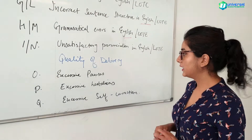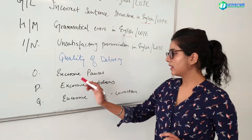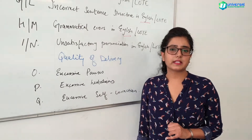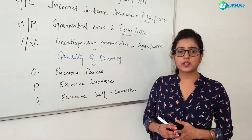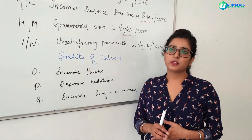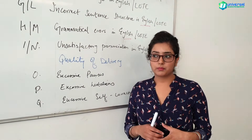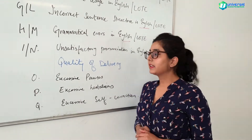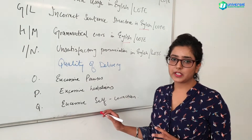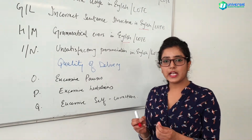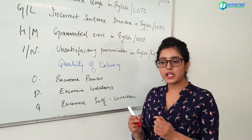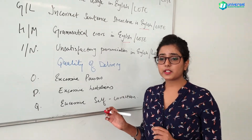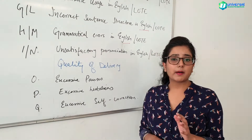Now let's look at quality of delivery. Code O is excessive pauses, code P is excessive hesitation, and code Q is excessive self-correction. A lot of students miss this point — they think that if they use good vocabulary, correct sentence structure, and don't make omissions or distortions, they will pass. That's not the case. If you have all of these delivery errors in your speech, pausing and hesitating, it makes a very bad impression on the examiner and you're not going to pass.